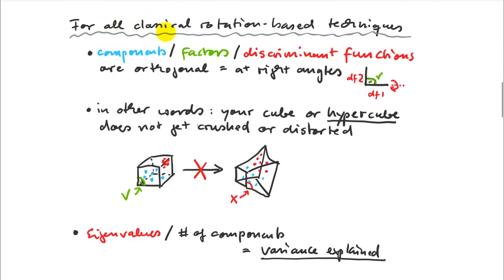The ordinations based on discriminant analysis and PCA can be quite similar, but you always get a cleaner separation of groups in discriminant analysis. If your objective is to show groups you already know and demonstrate which variables distinguish between them, that's the rotation to choose. The vocabulary differs across techniques: axes are called PC1/PC2 in PCA, Factor 1/Factor 2 in factor analysis, and discriminant functions — DF1, DF2, or CANDISC1, CANDISC2 — in discriminant analysis.